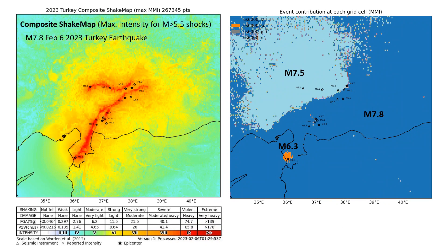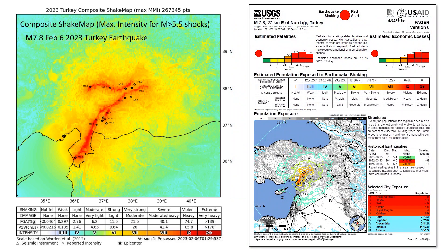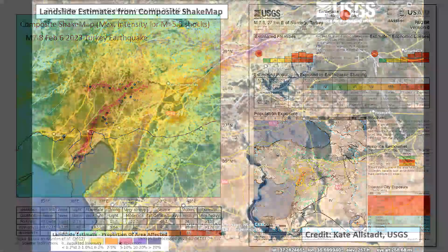One thing we've learned from this event is that it's really important to put together the shaking in a holistic way. We've put together a composite ShakeMap, which is the maximum shaking for all the aftershocks larger than magnitude 5.5, including the 7.5 aftershock. On the right is the contribution to the maximum shaking from the different earthquakes — the 7.5, the 7.8, and in the southern tip the magnitude 6.3 contributing to the largest shaking. When you look at this earthquake sequence, you're starting to see a different picture than the individual earthquakes, and it becomes very important to use that composite shaking estimate to try to look at the total losses.